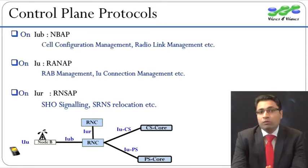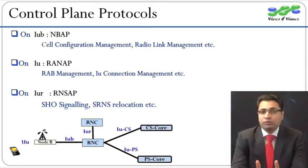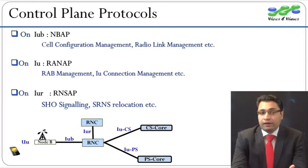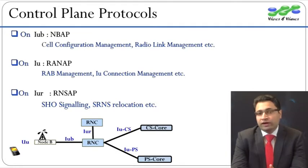RANAP is the common signaling protocol used on both IU-CS and IU-PS interfaces. Its main functions are RAB management and supervision of the IU connection which connects RAN with the core network.